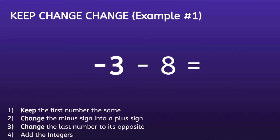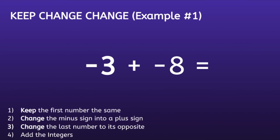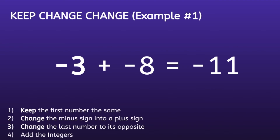Step one is to keep the first number the same. Step two is to change the minus sign into a plus sign. Step three is to change the last number to its opposite — the opposite of positive eight is negative eight. The final step is to add the integers: negative three plus negative eight is equal to negative eleven.